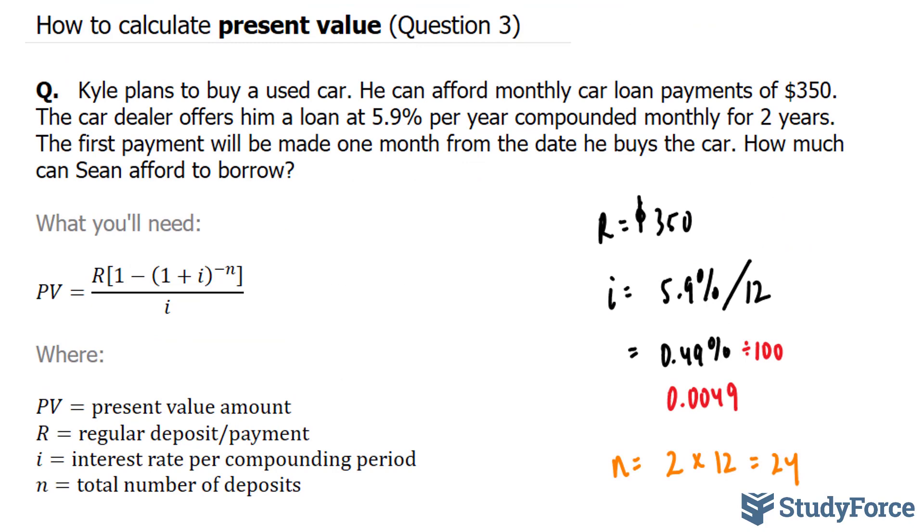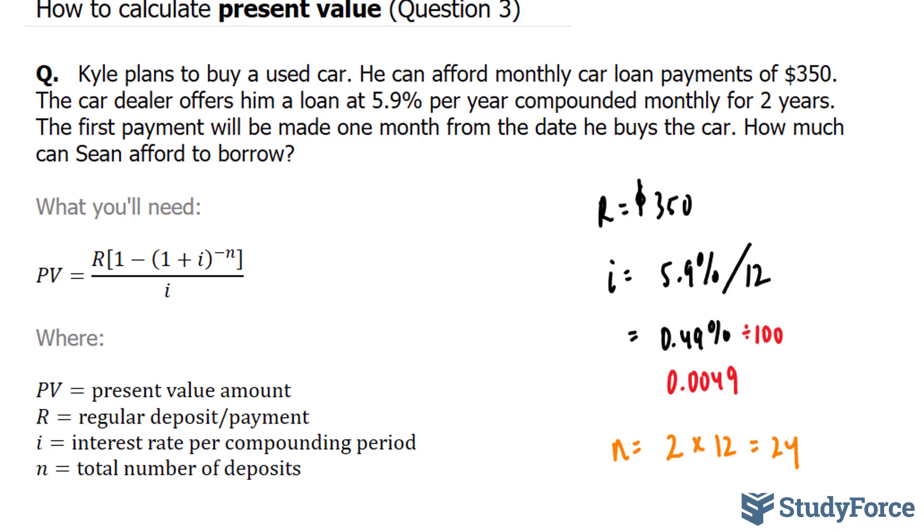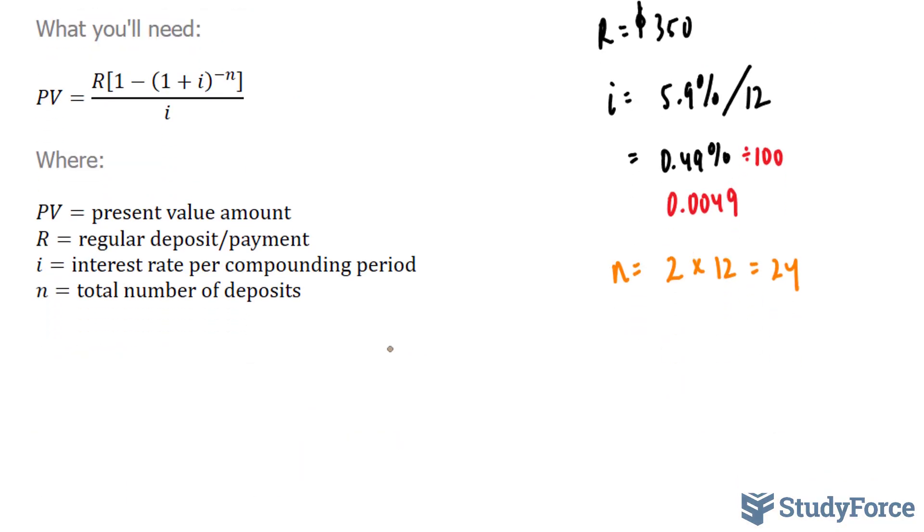Now that we have all the information we need, we can substitute these values into our formula to find PV. Let's do that. So we have PV is equal to R, which is 350, bracket 1, minus 1, plus 0.0049 to the power of negative 24, coming from the formula, over 0.0049.